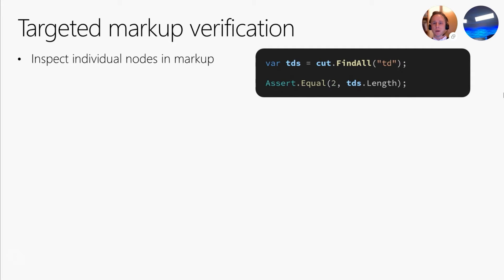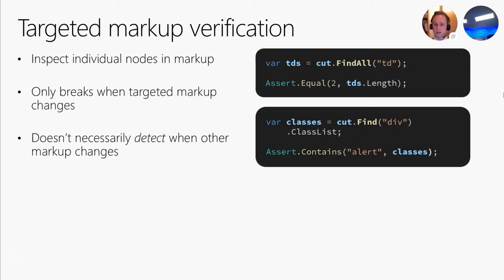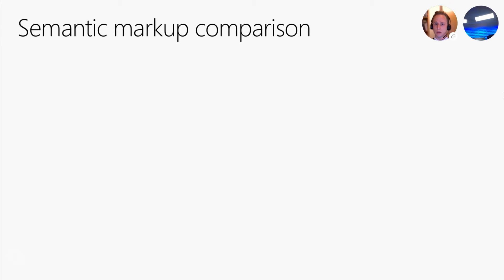By targeted markup verification, I mean finding and inspecting select nodes or elements in the rendered markup. This strategy can lead to quite stable tests as they only break when the specifically targeted nodes or elements change. The downside is that changes to other parts of the rendered markup will not be detected. Another issue to be aware of is that changing indentation or adding line breaks in your razor files can cause text nodes to change even if it's an insignificant change from an HTML point of view, so your tests will have to deal with insignificant white space. We can use the trim method to handle that.